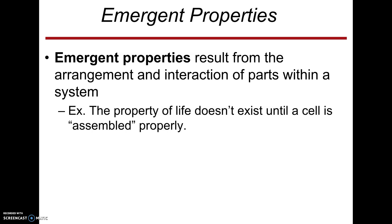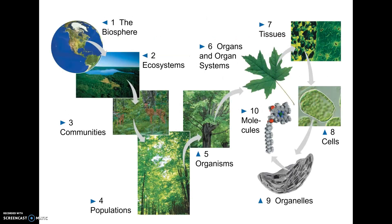If you have something smaller than a cell — like an organelle, like a mitochondria — that's not alive on its own. An atom is not alive on its own. The property of life does not exist until you get to the level of a fully assembled cell. So this is showing those levels of organization from biggest to smallest.